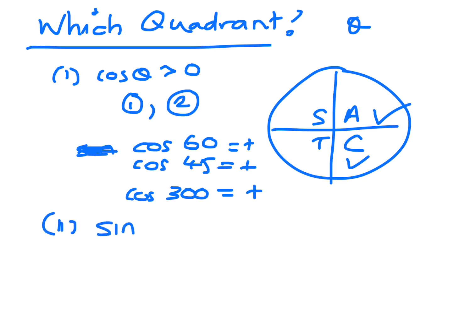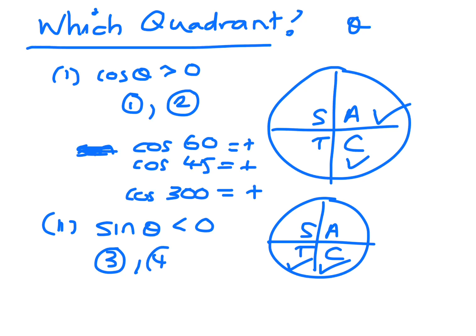Where is sine theta less than 0? This is all stations to Coffs. Sine is positive in 1 and 2, so it's negative in 3 and 4. That's quadrant 3 and 4.